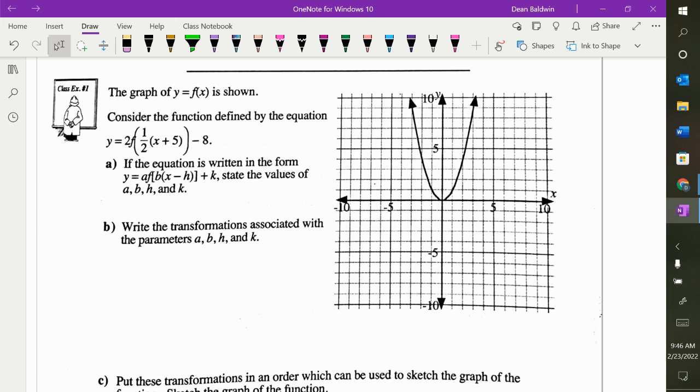First thing when you get a question like this, and you will get a question like this, is figure out what A, B, H, and K are and what you need to do. What's my A value? Two. What does that do? Vertical stretch by two.